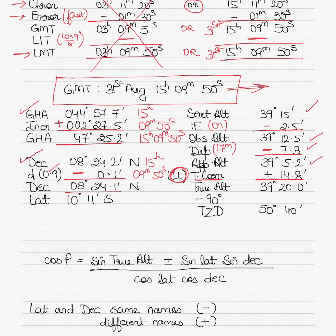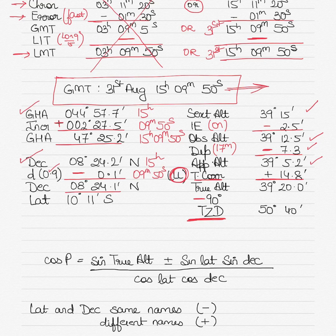To find the true zenith distance (TZD), subtract the true altitude from 90 degrees. Zenith distance is never negative — always subtract the true altitude from 90 degrees. So 90 degrees minus 39 degrees 20 minutes gives a true zenith distance of 50 degrees 40 minutes.